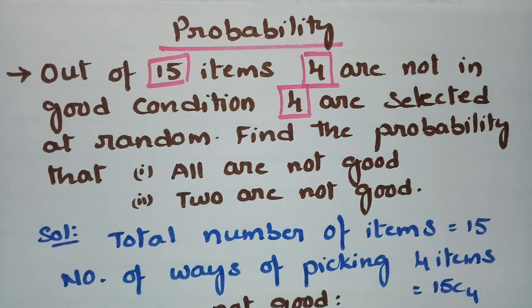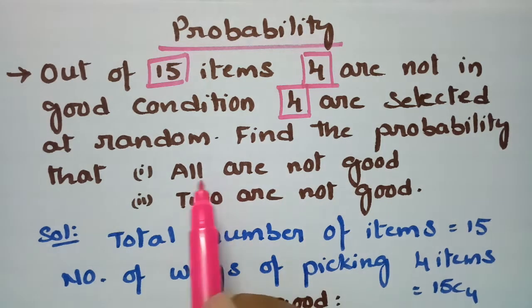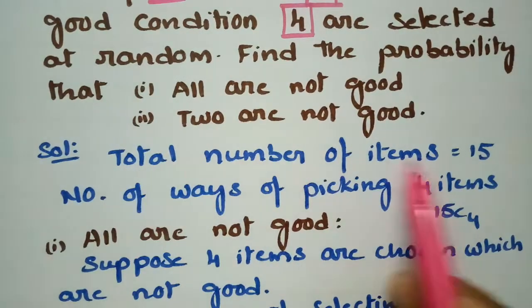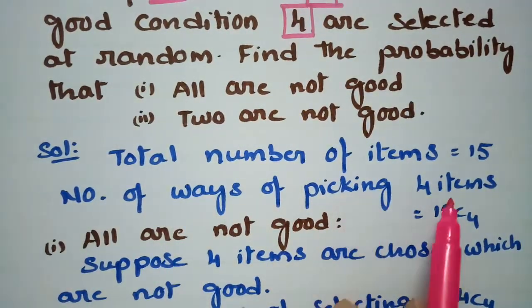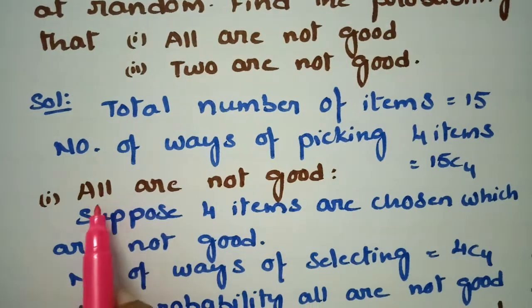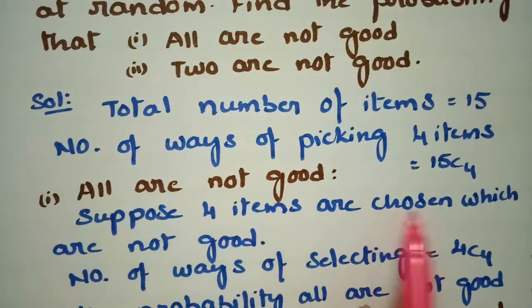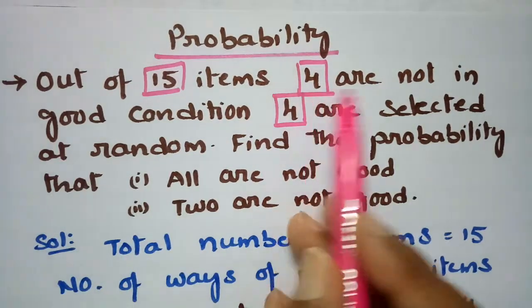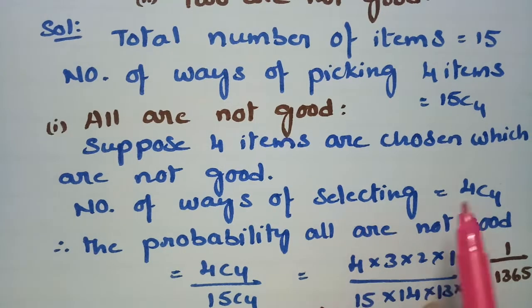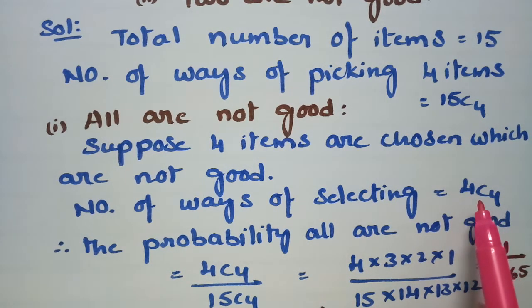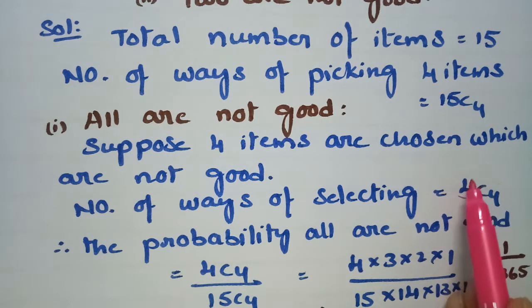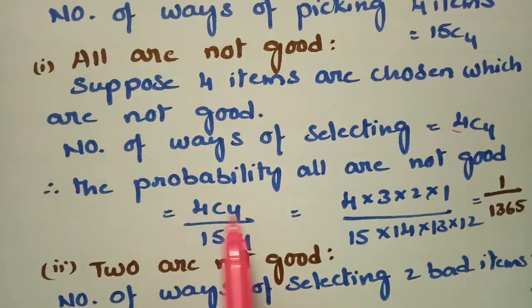For the first question — all are not good — that means every selected item is bad. The total number of items is 15, so the number of ways of picking 4 items is 15C4. Since there are 4 not-good items and we need to select all 4 bad items, the number of favorable ways is 4C4.